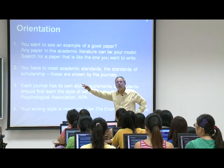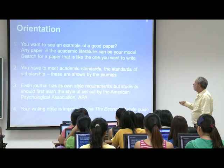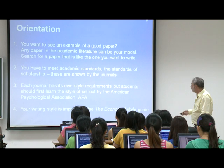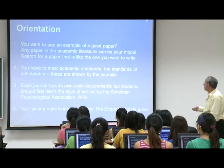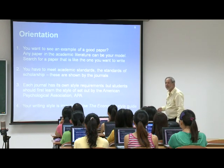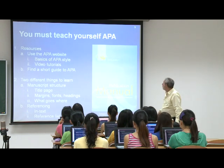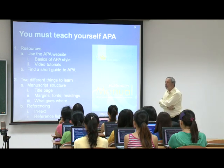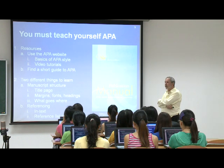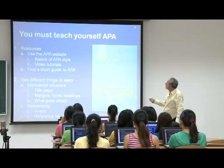Searching for papers requires a lot of patience — it's a good thing to do late at night and just keep going. Each journal has its own style requirements, but students should learn the style of the American Psychological Association, known as APA — that's what we use in this course. Your writing style is important; I picked the Economist style guide, which is available online and also in text form. You must teach yourself APA — I'm not going to teach you APA except in a very basic way. Once you've mastered it, the good news is you'll have it for life.